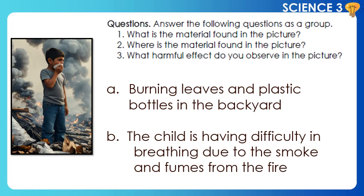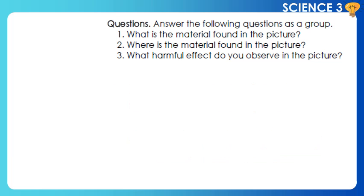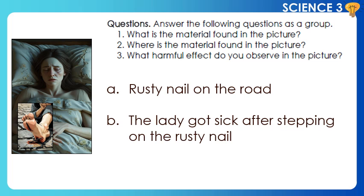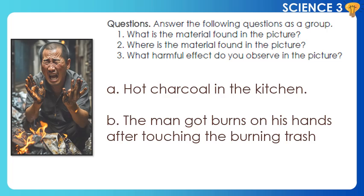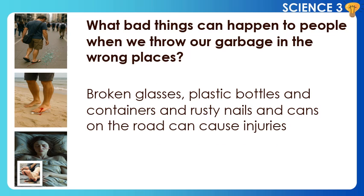5. Rotten food near the carinderia. 6. The person eating the food gets a stomachache. 7. Burning leaves and plastic bottles in the backyard — the child is having difficulty breathing due to the smoke and fumes in the backyard. What bad things can happen to people when we throw our garbage in the wrong places? Broken glasses, plastic bottles and containers, and rusty nails and cans on the road can cause injuries.